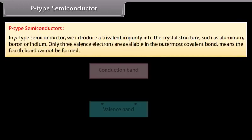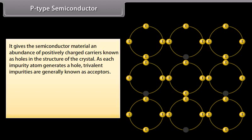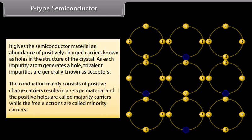P-type semiconductors: we introduce a trivalent impurity into the crystal structure, such as aluminium, boron, or indium. Only three valence electrons are available in the outermost covalent bond, meaning the fourth bond cannot be formed. This gives the semiconductor material an abundance of positively charged carriers known as holes. As each impurity atom generates a hole, trivalent impurities are generally known as acceptors. The conduction mainly consists of positive charge carriers, resulting in a P-type material where positive holes are the majority carriers and free electrons are the minority carriers.